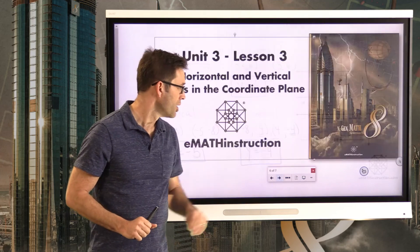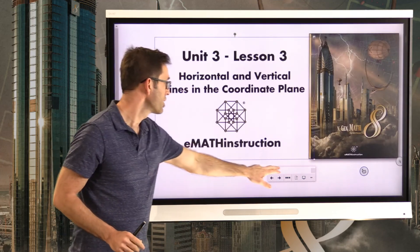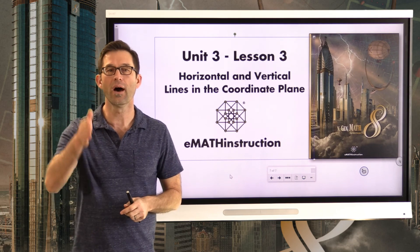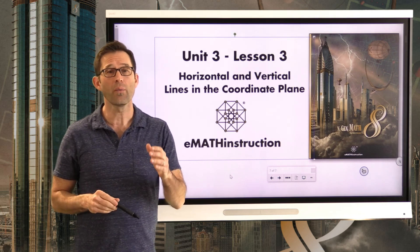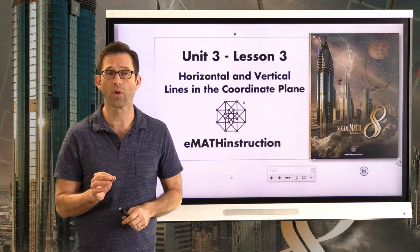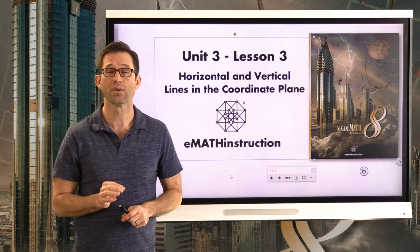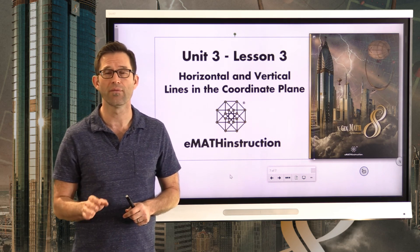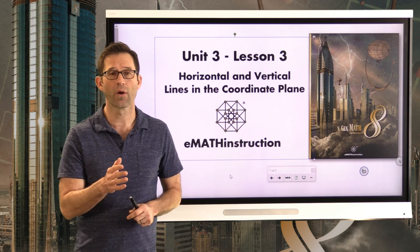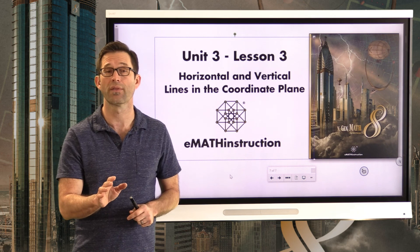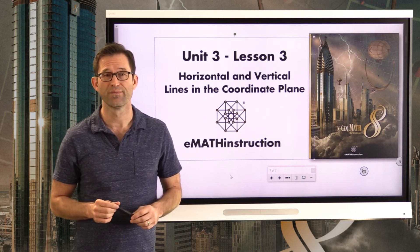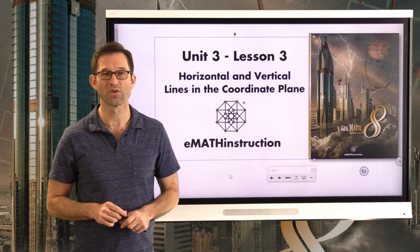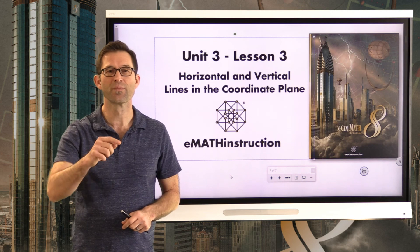What we saw today was the idea of vertical lines — ones that go strictly up-down — and horizontal lines — ones that go strictly left-right. We saw how we could describe those lines with very simple equations: vertical lines use x equals a number, horizontal lines use y equals a number. If somebody says plot the line y equals negative five, you know it's horizontal and you can figure out what points it goes through by listing points where y is negative five. Thank you for joining me for another NGen Math 8 lesson by EMath Instruction. My name is Kirk Weiler, and until next time, keep thinking and keep solving problems.